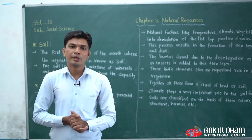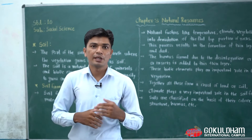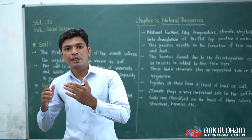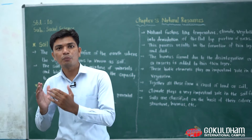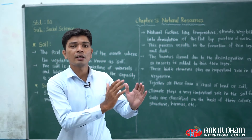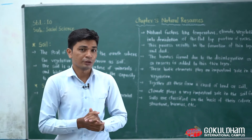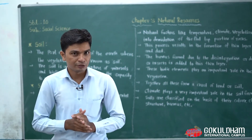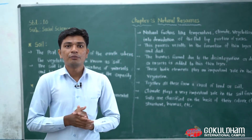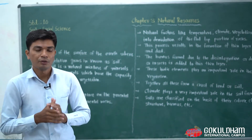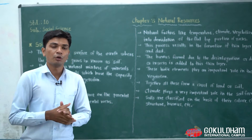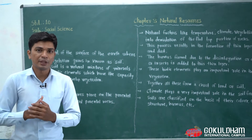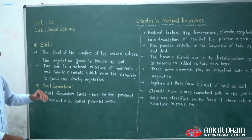We have also seen some examples of resources such as soil, river, mountains, vegetation, forests, animals, birds, etc. All these are examples of resources which are most essential for human beings' existence. Today, we are going to learn one of the most important elements or resources for human beings, which is soil.